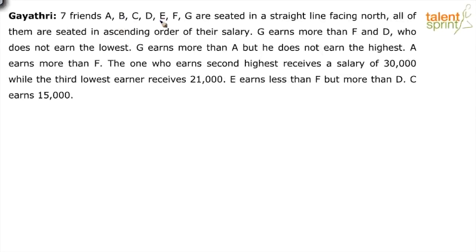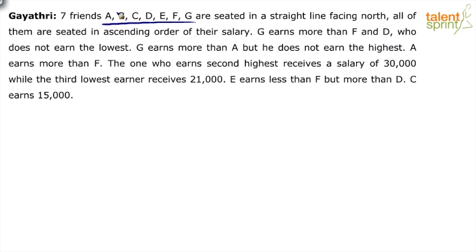7 friends A, B, C, D, E, F, G are seated in a straight line facing north. All of them are seated in ascending order of their salary. So basically, it's about arranging these 7 friends in a straight line facing north.